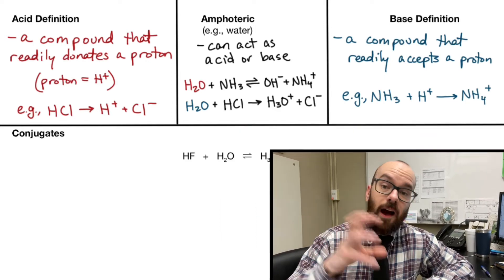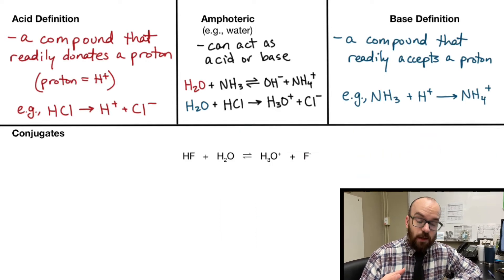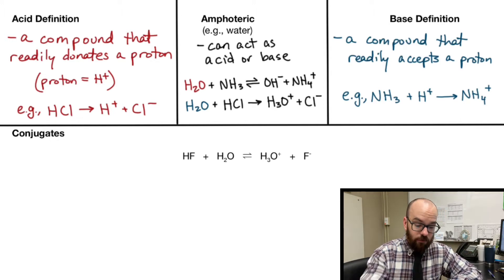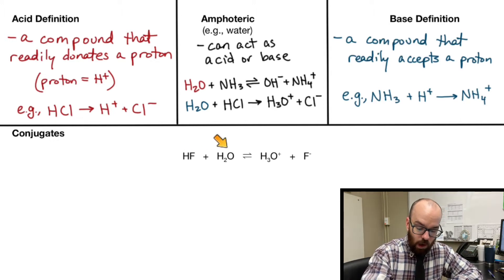Now we're going to identify conjugate acids and conjugate bases. The conjugates you'll always find on the other side of the reaction. So let's look at this reaction here. We have hydrofluoric acid, and it's in water, and it's going to produce these two products here.